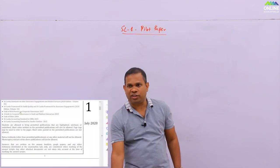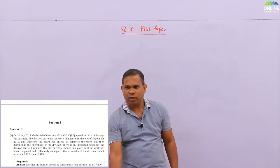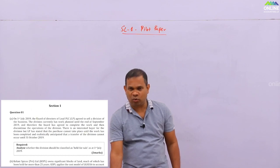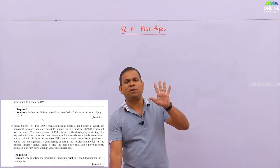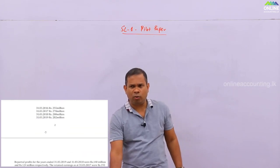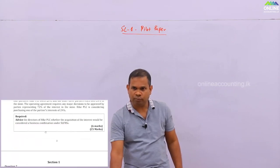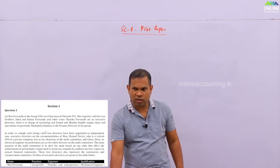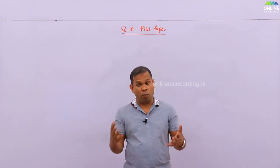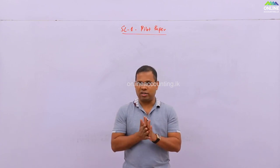Now let's look at the questions. Question number 1 is directly from the financial reporting part, on application of accounting standards, so I am not going to go through that. I will go directly to question number 2, which comes from risk of material misstatement or the corporate governance part. My objective here is not to write the full answer, but to give you the answer structure and how to write the answer.